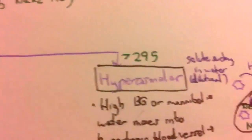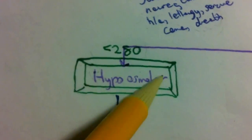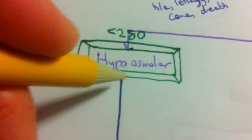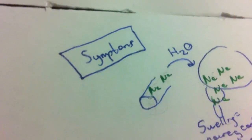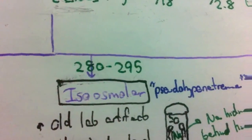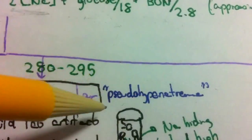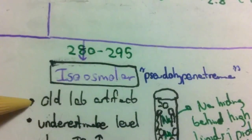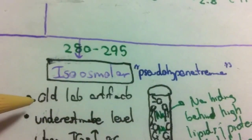Hyposmolar hyponatremia is the only true hyponatremia - the only one that will cause symptoms. Isoosmolar hyponatremia is also referred to as pseudohyponatremia, and this is largely an old lab artifact. Modern labs measure sodium using more accurate mechanisms, so you won't encounter this problem much today.